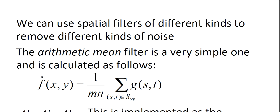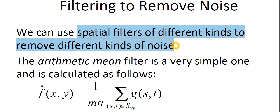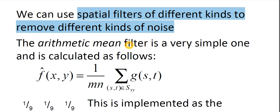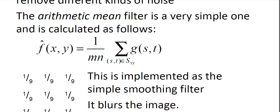We need to filter the images for removing the noises. For that, we will use special filters of different kinds to remove these different types of noises. The arithmetic mean filter is a very simple one and can be calculated like this. It's very simple: f(x,y) = 1/(mn) × Σ(s,d)∈S(x,y) g(s,d). This is implemented as the simple smoothing filter and it will blur the image.